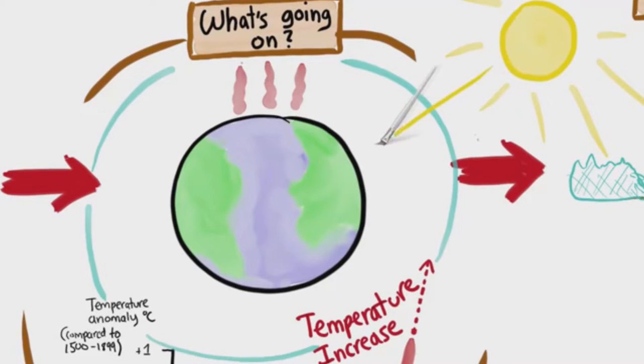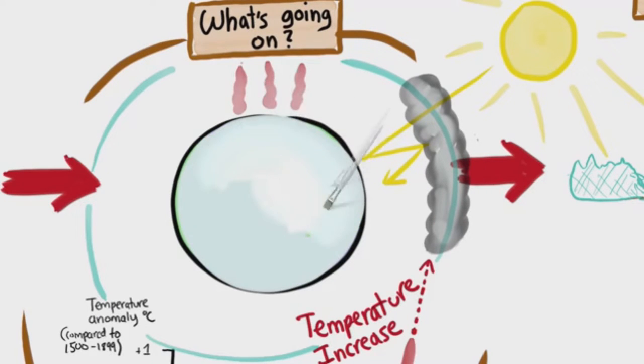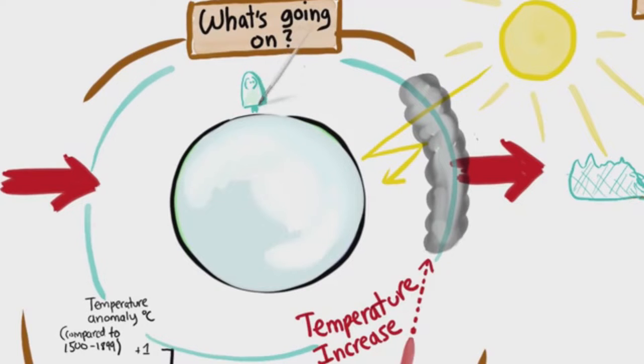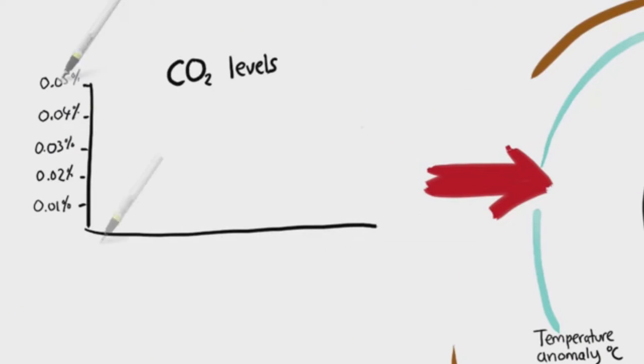Here's our atmosphere, otherwise known as the sky. You've probably heard of the greenhouse effect. Sunlight continuously hits our planet and reflects back out, but greenhouse gases like carbon dioxide and methane capture some of that energy and keep it in like a blanket. That's a good thing actually, because otherwise the entire Earth would be a frozen ball of ice.